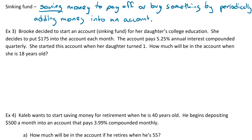Let's look at Example 3. Brooke decided to start a sinking fund for her daughter's college education. She puts $175 into the account each month. The account pays 5.25% annual interest compounded monthly — note: 'quarterly' in the original is a typo and should be 'monthly.' She started this account when her daughter turned one. How much will be in the account when her daughter is 18 years old?